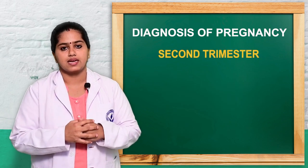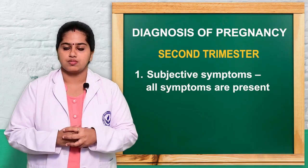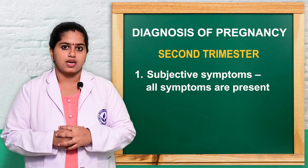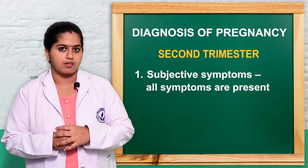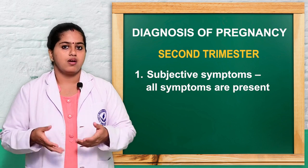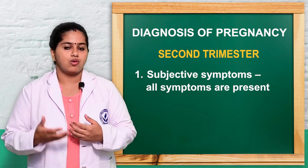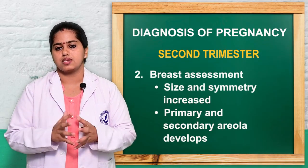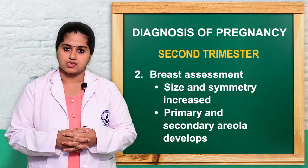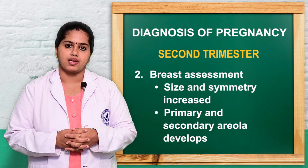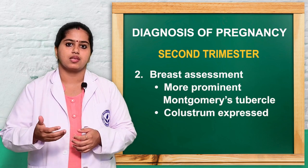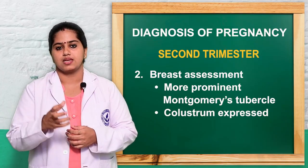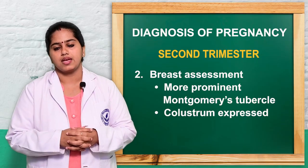In the second trimester, the subjective symptoms from the first trimester can continue. Some women's nausea and vomiting will resolve. Bladder irritability may also decrease because the uterus grows upward from the pelvic region into the abdominal region, so lower pressure symptoms decrease. Objectively, breast size and symmetry increase, secondary areolar development occurs, Montgomery's tubercles become more prominent, and colostrum — a thick yellow fluid — can be expressed in some women.